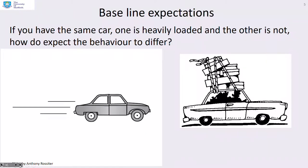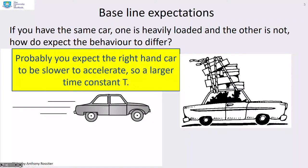Baseline expectations then. If you have the same car, but one is heavily loaded and the other is not, how would you expect the behaviour to differ? You can see here we've got two cars, but one of them is carrying lots of luggage and passengers and the other isn't. Well, you would expect the right hand car is going to be much slower to accelerate. So we'll have a larger time constant T. In other words, if you increase the mass, the time constant gets larger.